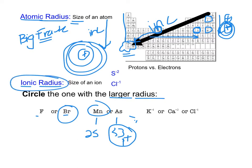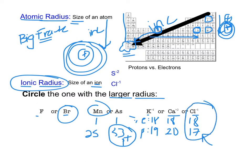Let's jump into ionic radius. It's a similar trend in terms of size, but an ion is a charged particle. In this example — potassium ion, calcium ion, chlorine ion — they're all isoelectronic; they all have 18 electrons. So we can't look at electrons; we look at the proton pull. Potassium has 19 protons, calcium has 20, chlorine has 17. So the larger radius is going to be chlorine because it has the least pull from the nucleus. Calcium has 20 protons pulling on those 18 electrons — that's going to be a much smaller atom.